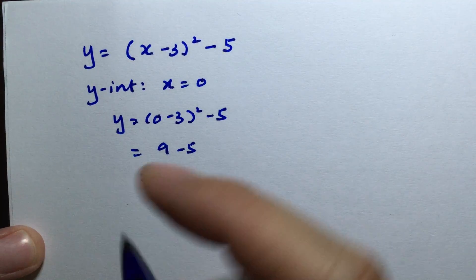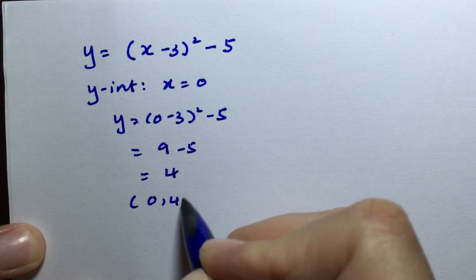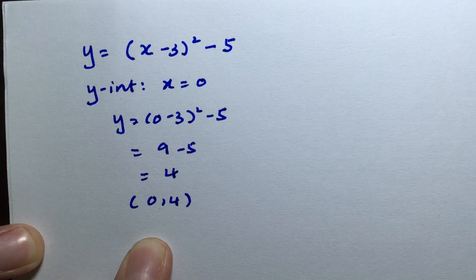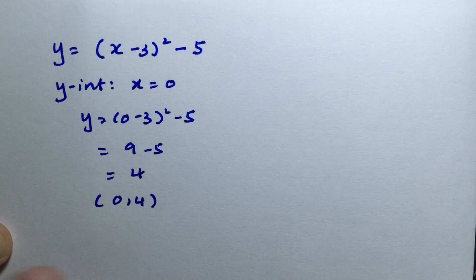So the y-intercept is (0, 4). We will use this point to help us sketch the graph.